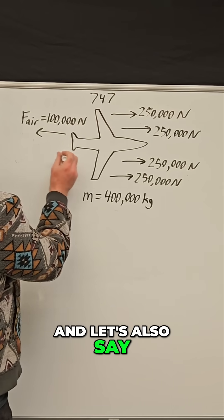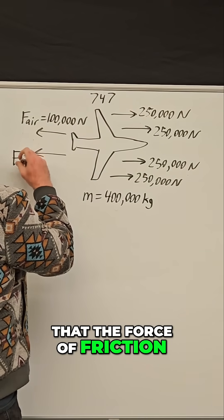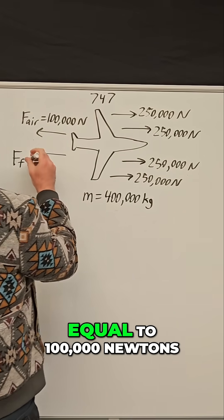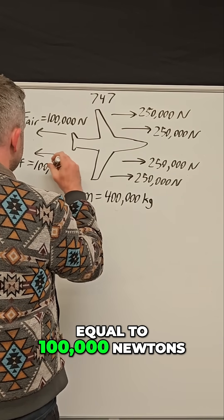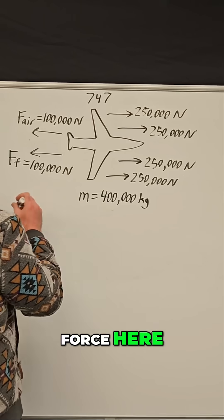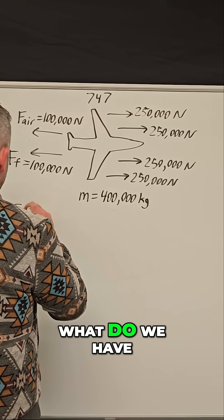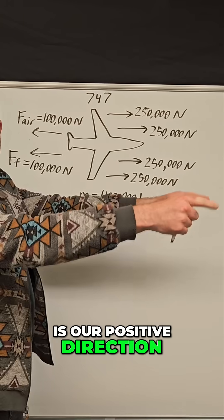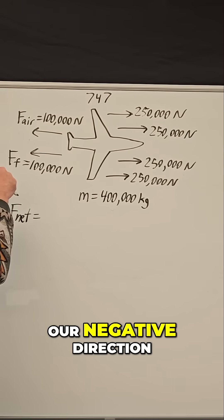Let's also say the force of friction between the wheels and the ground equals 100,000 newtons. If we want to calculate the net force here, first let's establish that this is our positive direction and to the left will be our negative direction.